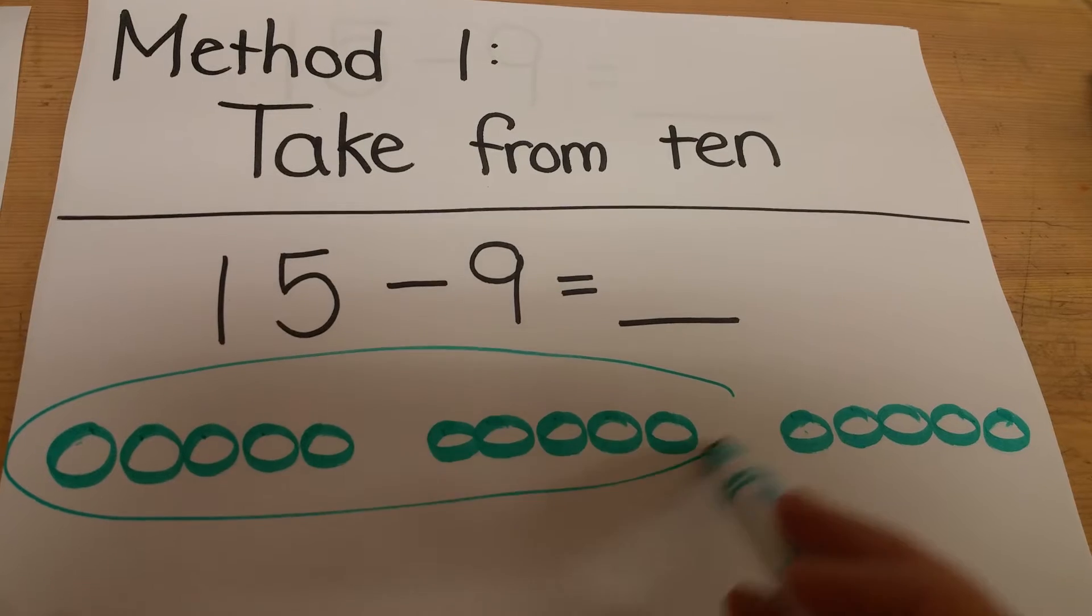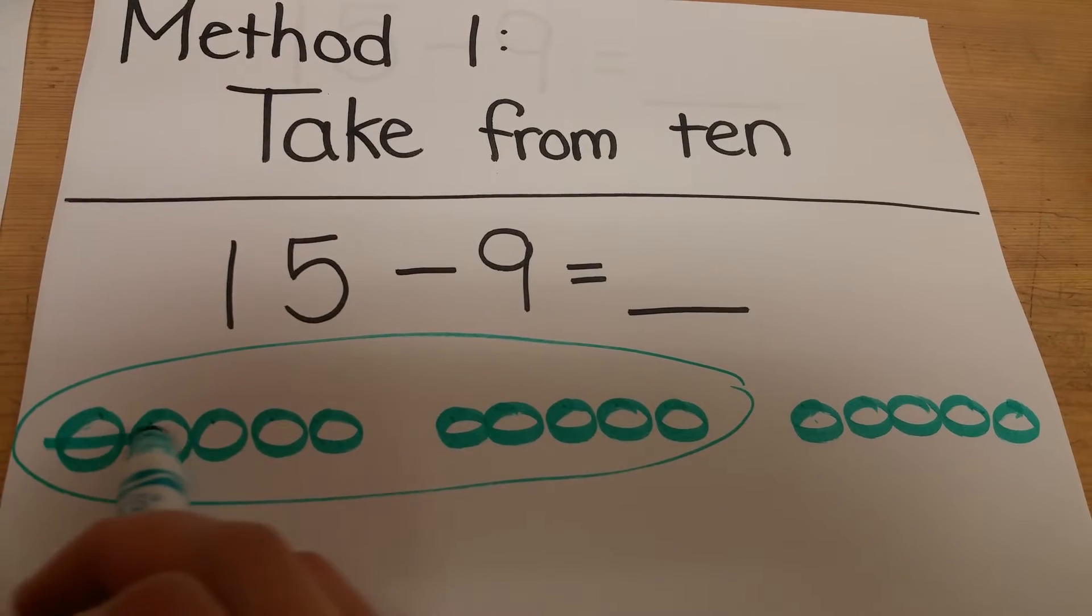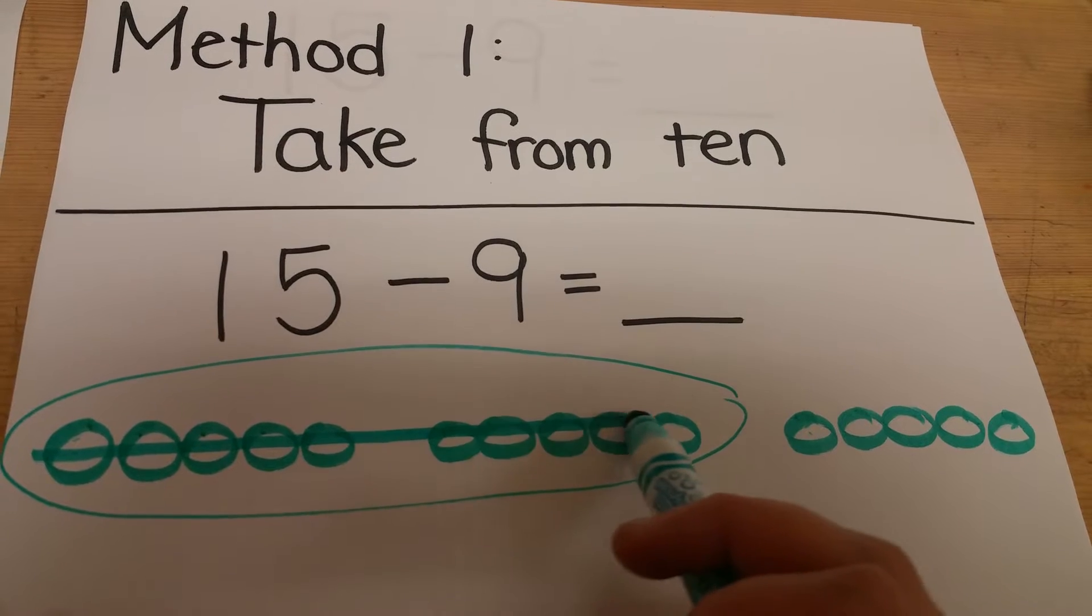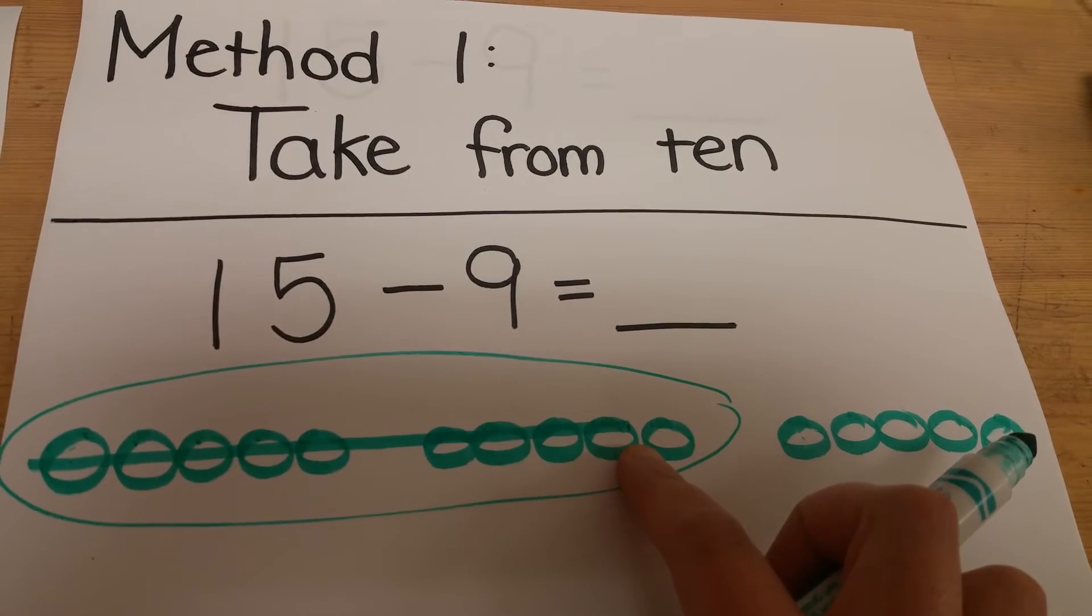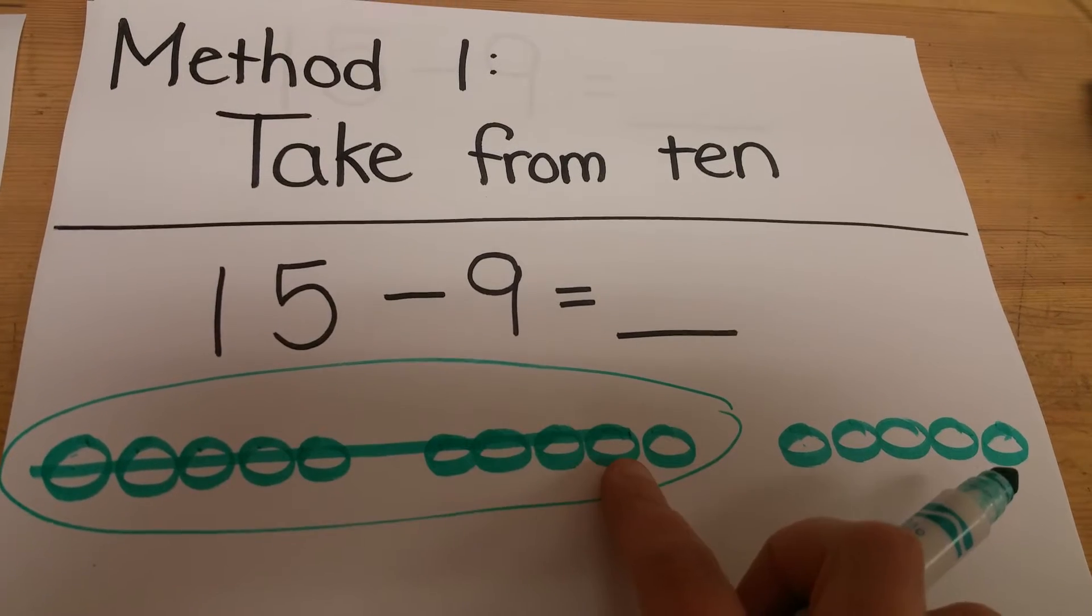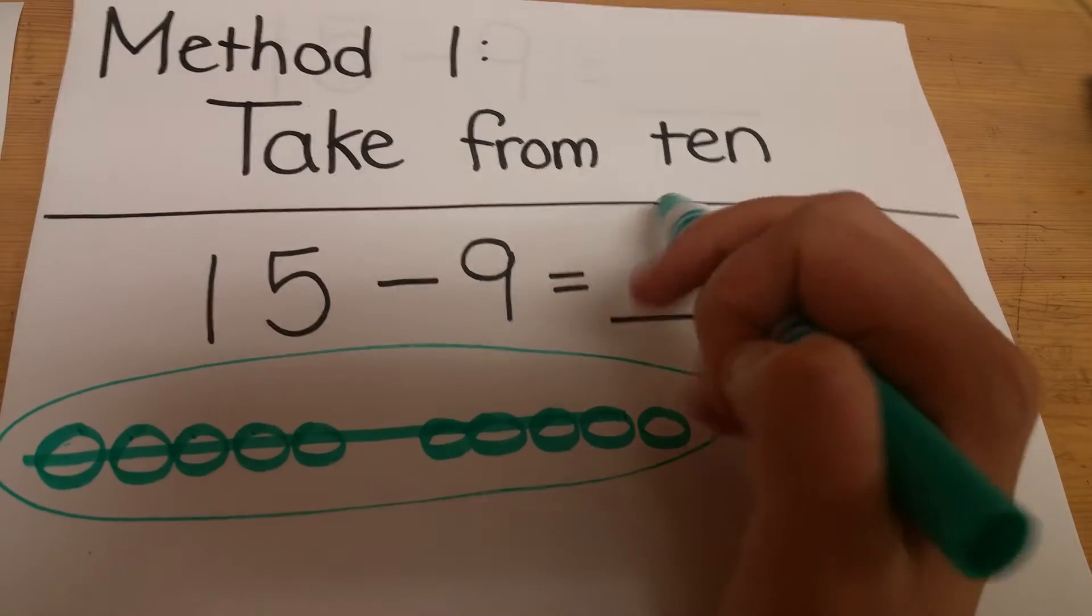Circling our 10 and taking 9 away from the 10. They should already know 10 minus 9 is 1, so instead of having to cross out individually they just cross out the whole group of 9 and then they're thinking 5 plus 1 to find their answer.